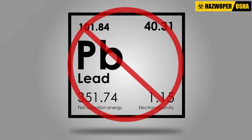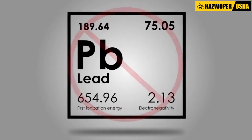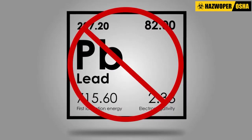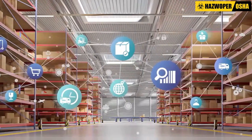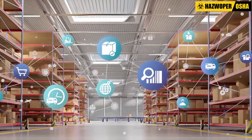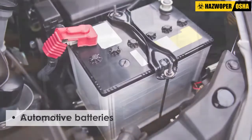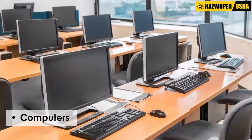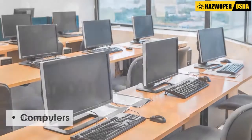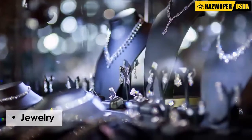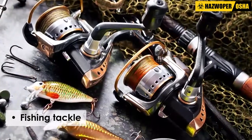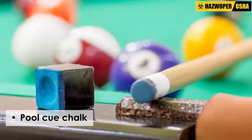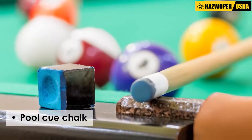While lead is prohibited in many products in the United States, it may still be found in commercial products such as automotive batteries, computers, jewelry, fishing tackle, and pool cue chalk, among many others.